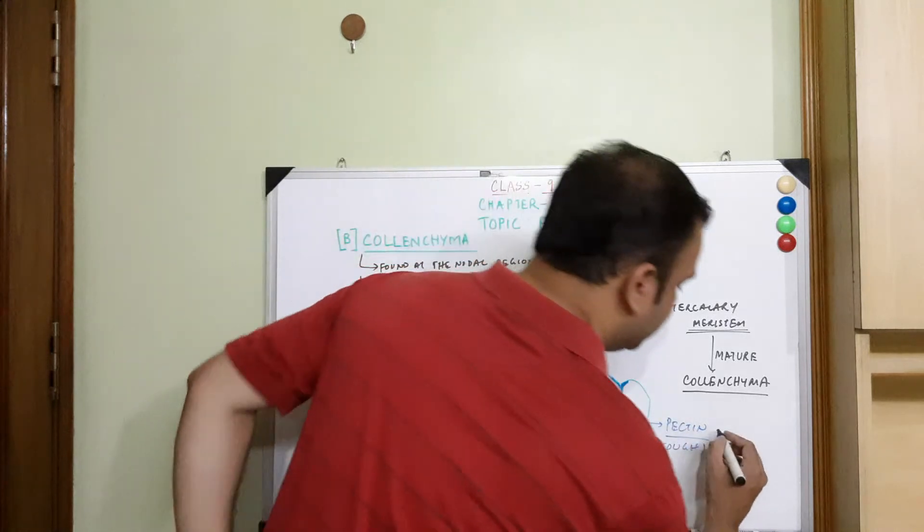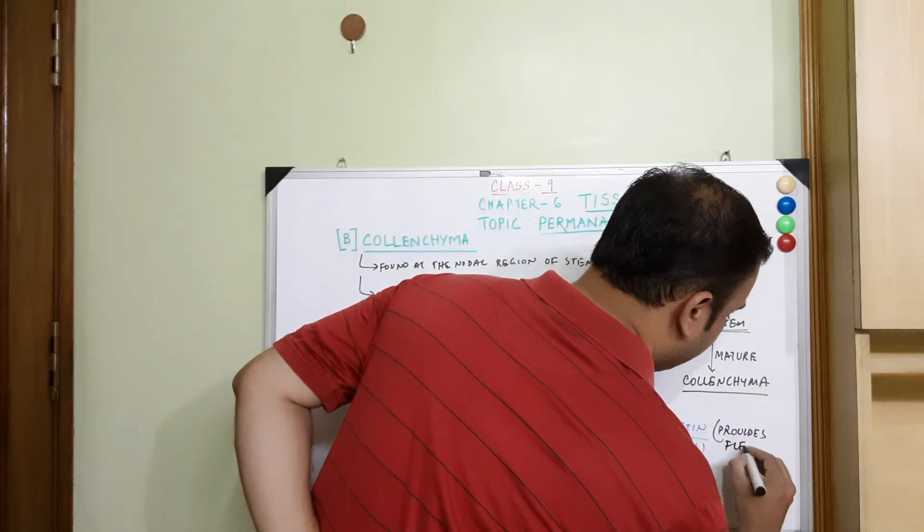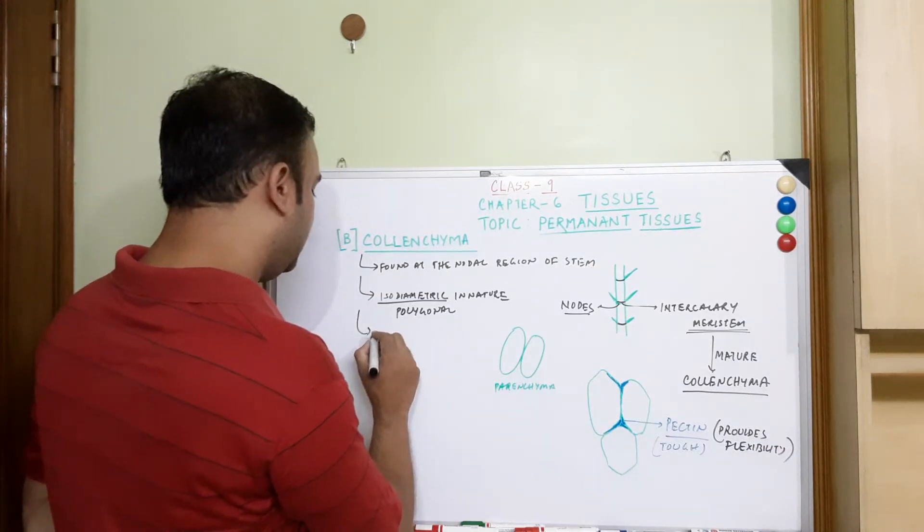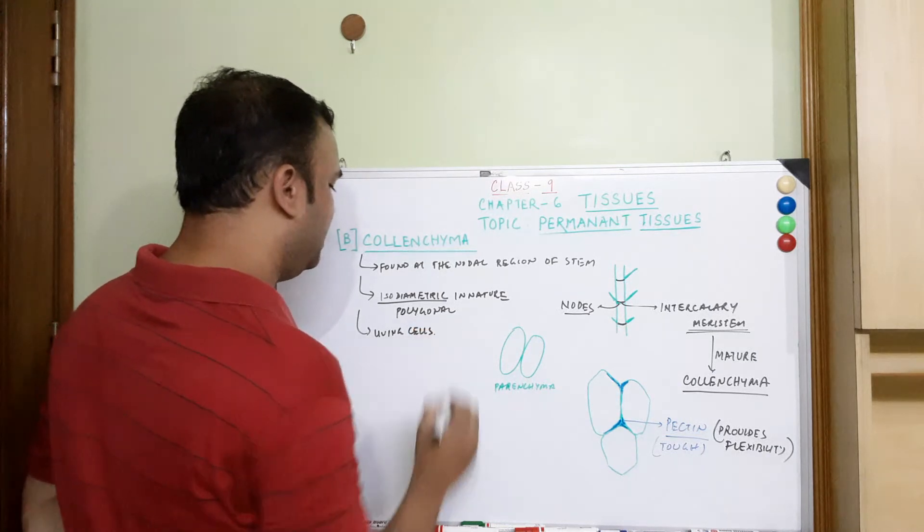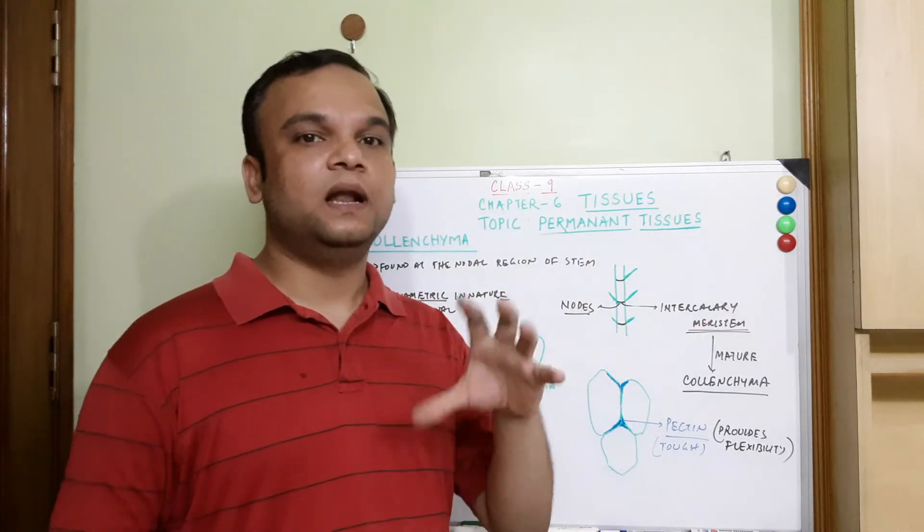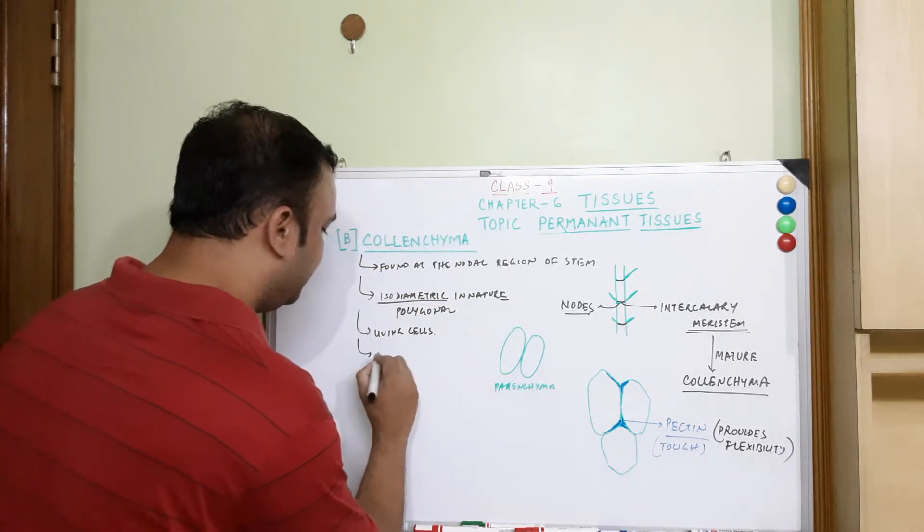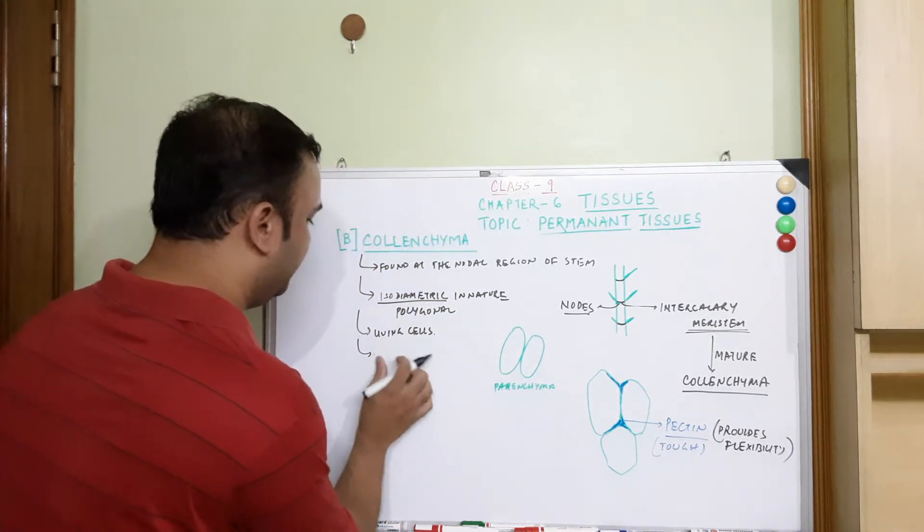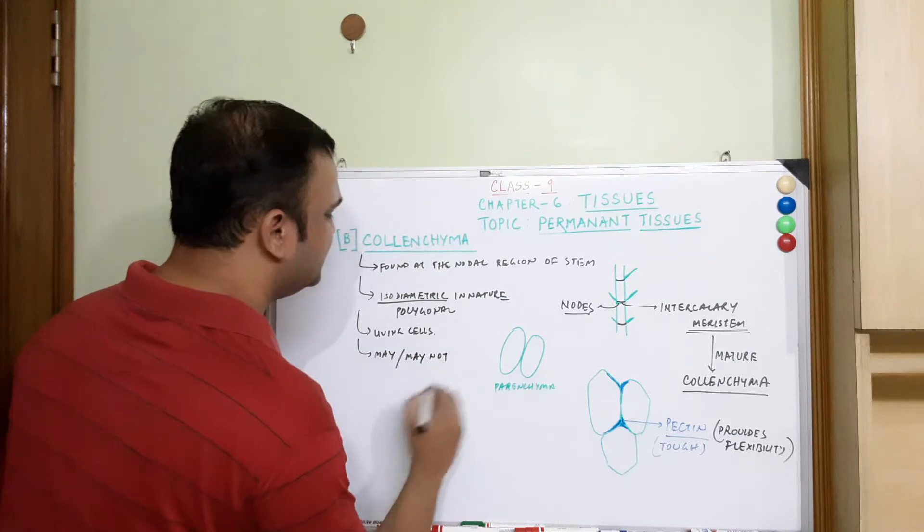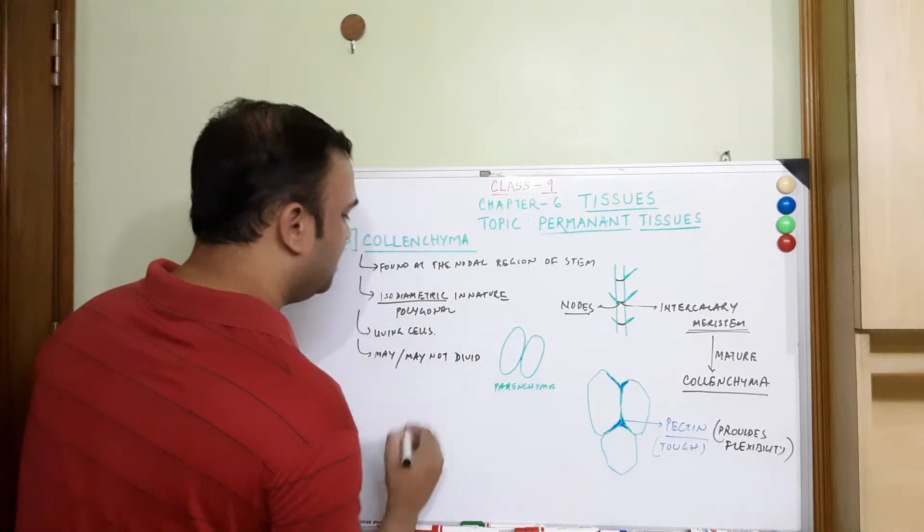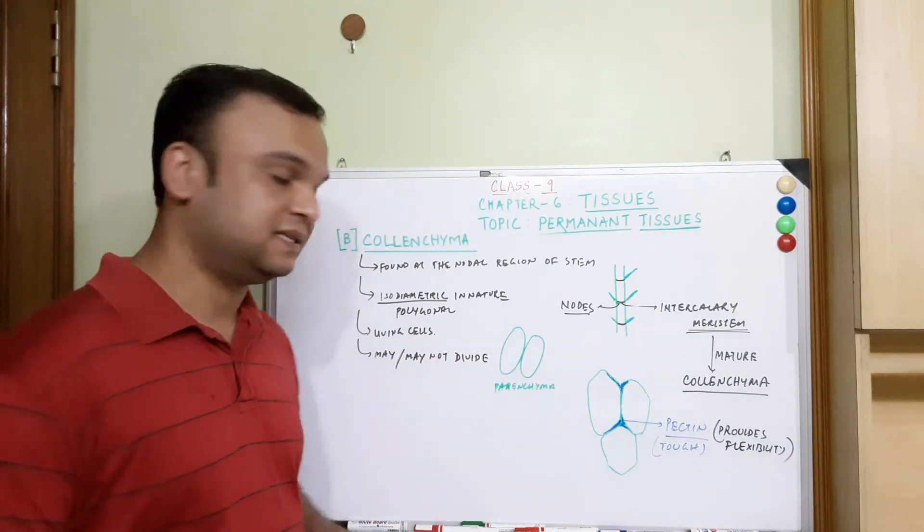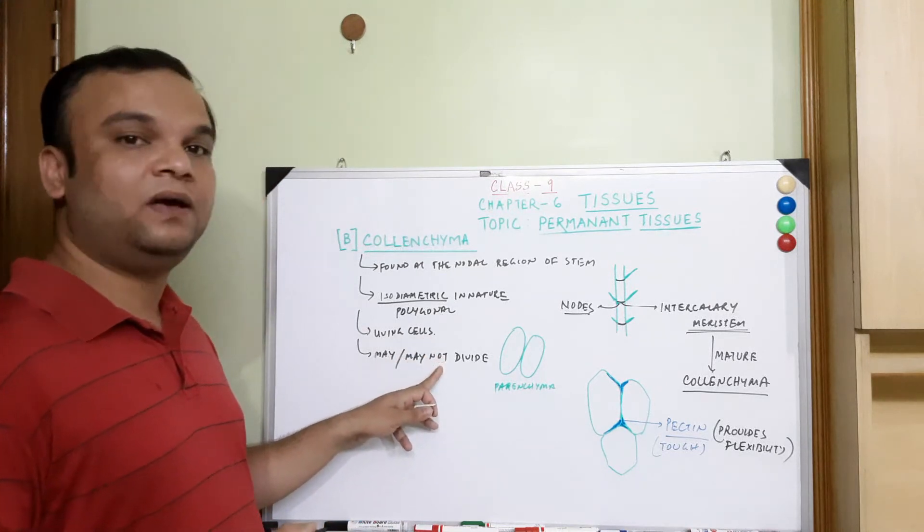Next, are these cells living? These collenchyma cells are living cells. They have matured from the parenchyma tissue. They are not as active as parenchyma tissue but they are living cells. So can they divide? They may or may not divide. It depends on how much emergency there is, how much requirement there is for their division. Generally they do not divide but yes they can sometimes divide. So they are living cells but they may or may not divide.